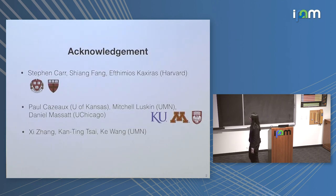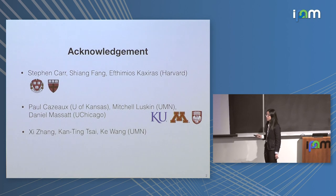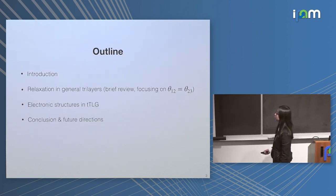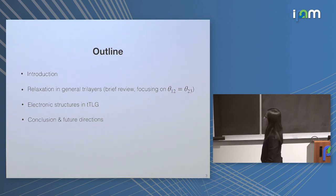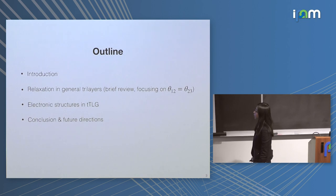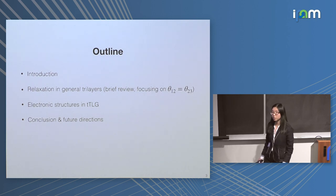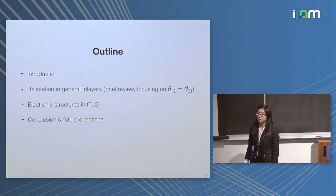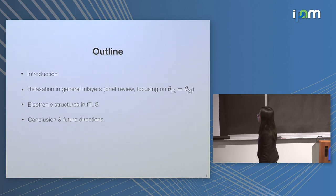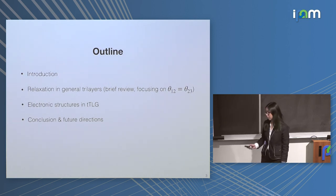First I'd like to thank my collaborators. A lot of them have given talks today and on Monday, so I won't repeat too much of what they've said, but I will have some quick recap. Here's a quick outline of my talk: first a quick introduction of the system of interest and some motivation for why we care about the system. Then I'll talk about modeling relaxation in the system, focusing on physical intuition and the case where twist angles are equal. Then we'll move on to the electronic structure of twisted trilayer graphene, and I'll finish with a conclusion.